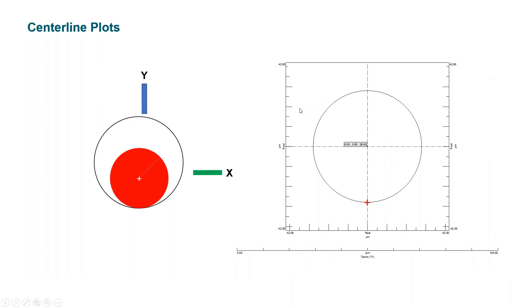So let's go a bit further and try to understand how this centerline plot is built and what's the added value. So in this example, I have on the left my shaft, which is lying down in the bearing, because there is no motion of the shaft. So there is no oil film under the shaft.